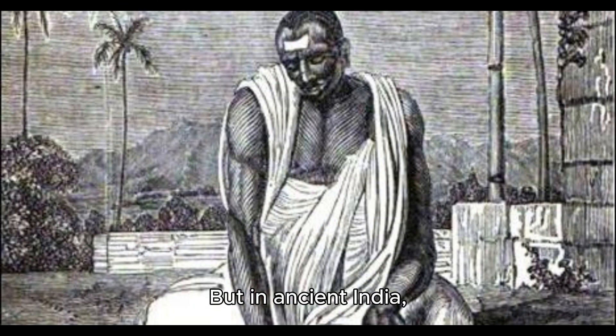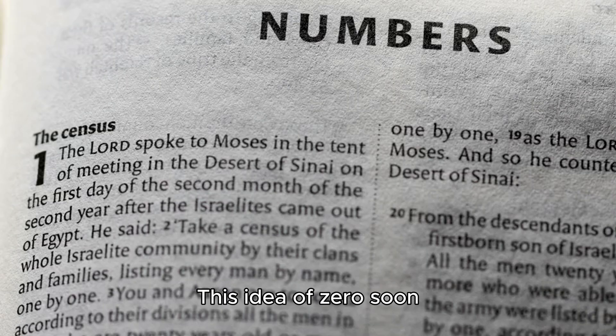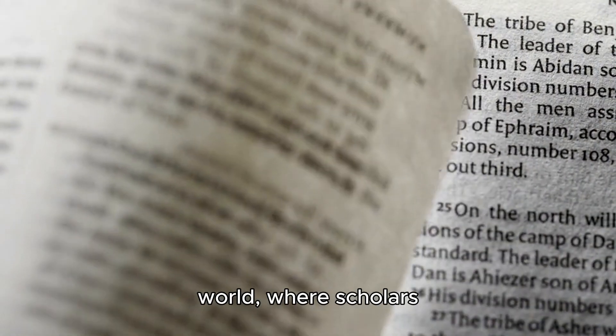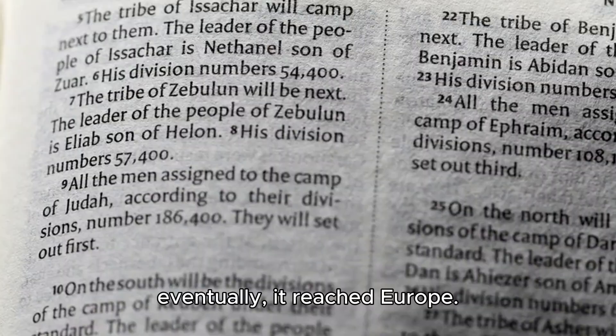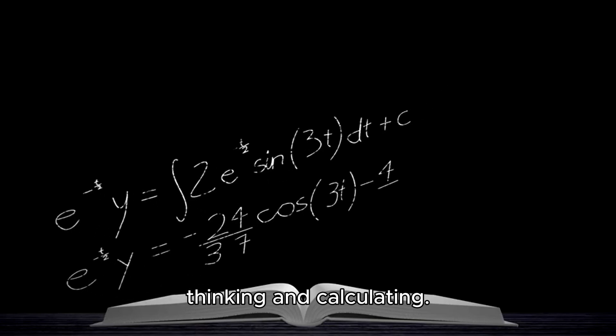But in ancient India, around the 7th century, a brilliant mathematician, Brahmagupta, realized that zero could be much more than just a placeholder. It could stand on its own, as a number with its own meaning. This idea of zero soon traveled from India through the Islamic world, where scholars embraced it, and eventually, it reached Europe. From then on, zero became a cornerstone of mathematics, unlocking new ways of thinking and calculating.